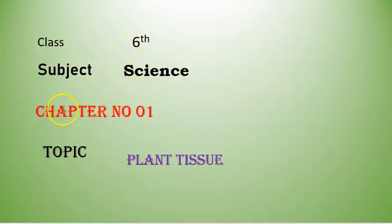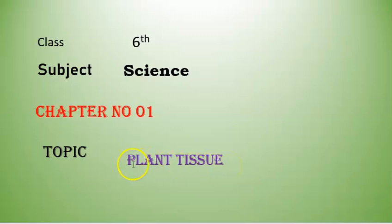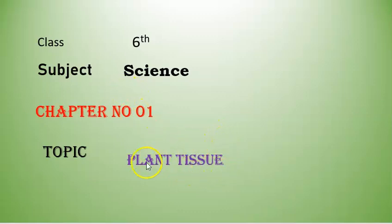My name is Kilaas 6 Science. Kilaas 6 Science is chapter number 1. Chapter number 1 is the topic of plant tissue. This video is plant tissue.